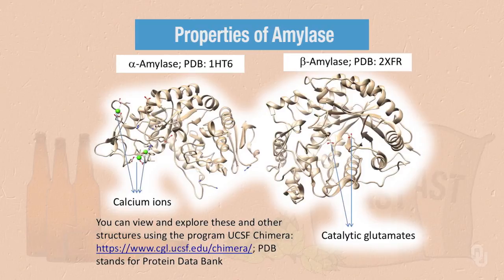Shown in these two figures are alpha-amylase and beta-amylase. Note the calcium ions, represented as green spheres, that alpha-amylase requires, and the catalytic glutamates, shown in stick form, that beta-amylase uses as part of its catalytic residues. You can view and explore these and other structures using the program UCSF Chimera, available at the indicated URL. Once downloaded, you can visit the PDB (Protein Data Bank), obtain codes for these structures, and view and manipulate them on your home computer.